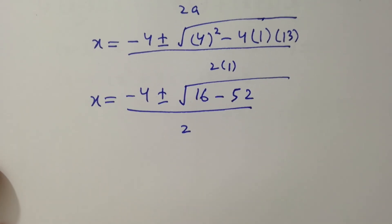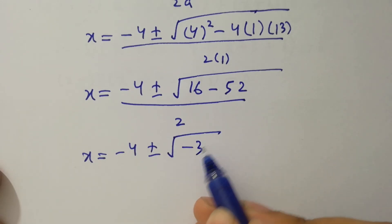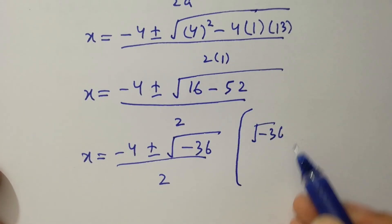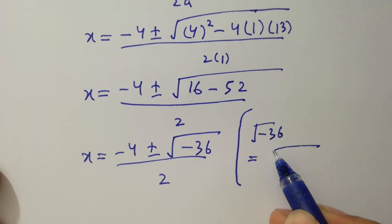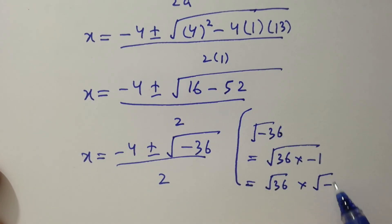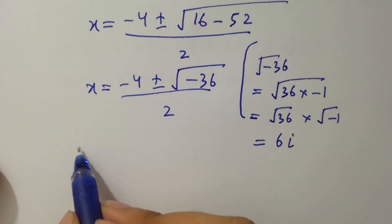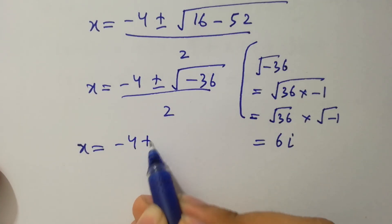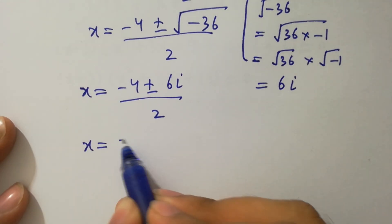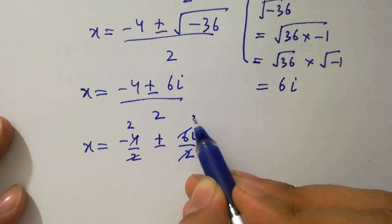This gives x equals minus 4 plus or minus square root of 16 minus 52, over 2, which is minus 4 plus or minus square root of minus 36, over 2. Since the square root of minus 36 equals 6i, because square root of 36 is 6 and square root of minus 1 is i.